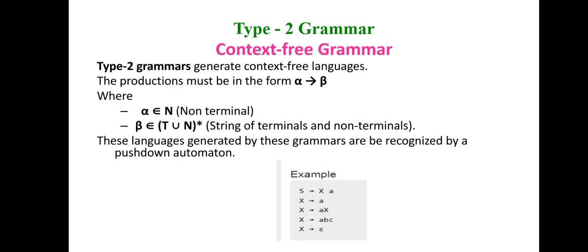The third category is Type 2 grammar, known as context free grammar. If a language is formed based on this, it is called a context free language. The production rule is alpha produces beta, where alpha is a single non-terminal on the left hand side, and beta is a combination of terminals and non-terminals. A restriction is that any non-terminal on the right hand side must appear at the extreme ends of the string - at the start or end - not in the middle. The mathematical model for simulating this grammar is pushdown automata.